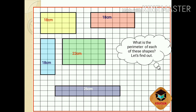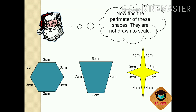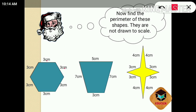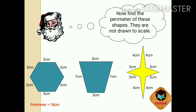So this way you can find out the perimeter of any shape easily. You have to remember that perimeter is the total length of each side of any shape. Now find the perimeter of these shapes — they are not drawn to scale. The first one is a hexagon; it has six sides and the length of one side is 3 centimeter. So: 3 plus 3 equals 6, plus 3 equals 9, plus 3 equals 12, plus 3 equals 15, plus 3 equals 18. The perimeter of this hexagon is 18 centimeter.